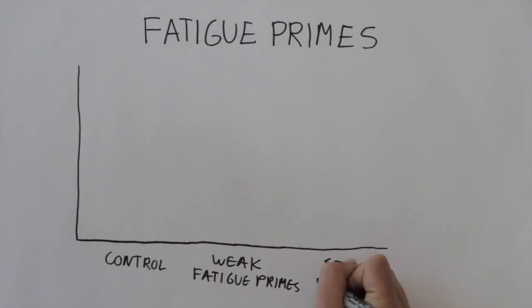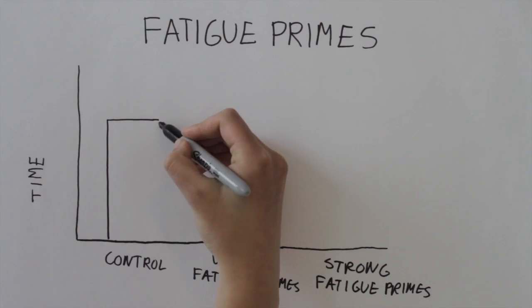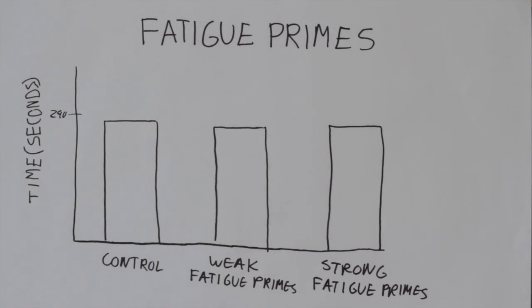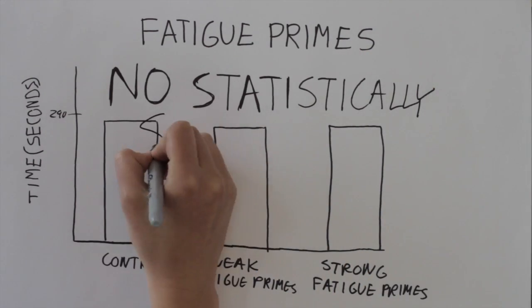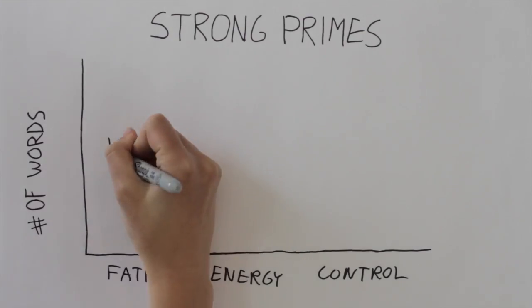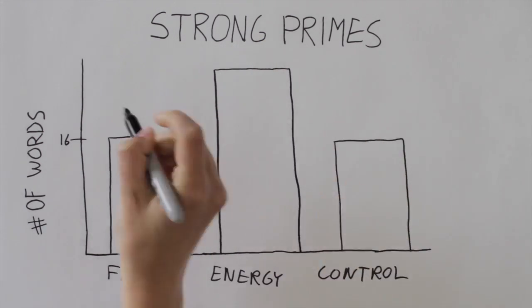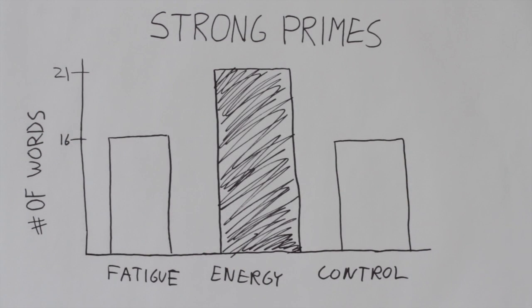The results were really intriguing. Increasing the salience of fatigue, whether using a weak prime or a strong prime, had no statistically significant effect on persistence or performance. But increasing the salience of energy using strong primes significantly boosted participants' performance.